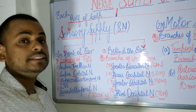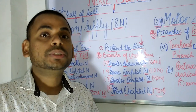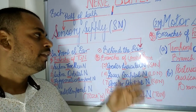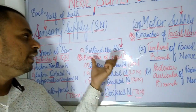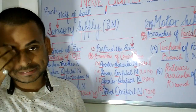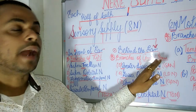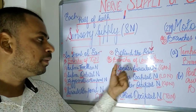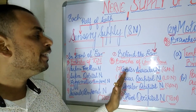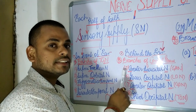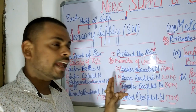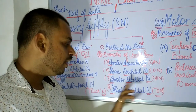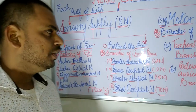Moving on to the sensory nerve supply behind the ear — these nerves are branches of the cervical plexus, supplying the region of the scalp behind the ear. The four nerves under this category are: the greater auricular nerve, the lesser occipital nerve, the greater occipital nerve, and the third occipital nerve.